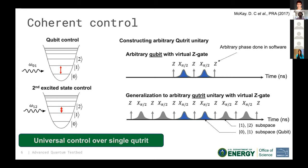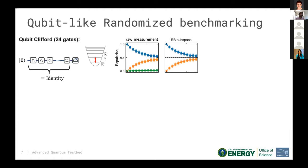This means we have universal control over a single qutrit. Now the question is: how well is that control? The solution, as has been shown with significant recent effort, is randomized benchmarking. The idea is to generate a random sequence of N Clifford gates and invert it at the end with a single gate, effectively applying the identity. In an ideal world you recover the ground state, but errors cause the system to depolarize as you average over random sequences.